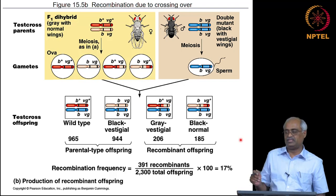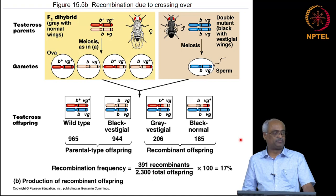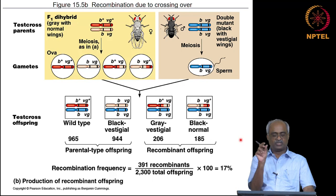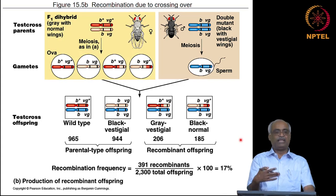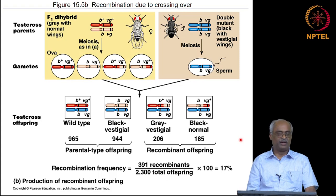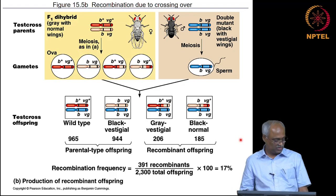The recombination frequency indicates the distance between two genes on the chromosome. However, this genetic distance is not exactly physical distance — physical distance is measured in DNA base pairs, while genetic distance is based on frequency. The two are not always directly proportional because some regions of the chromosome, called recombination hot spots, have higher frequencies of recombination than average loci. Despite these exceptions, the relationship generally holds and forms the basis for developing genetic maps.